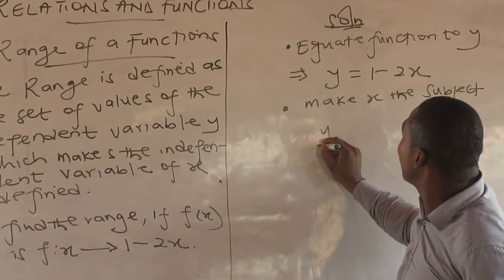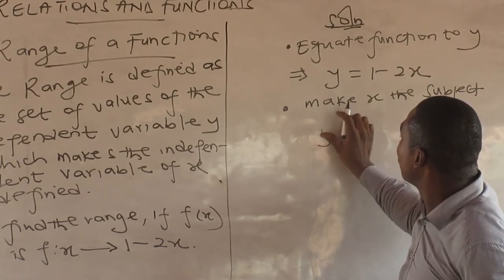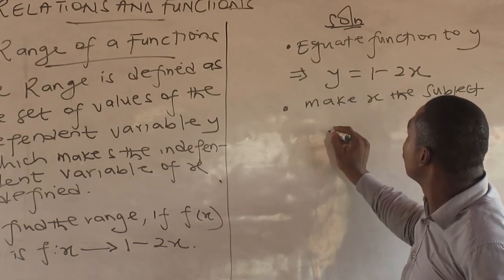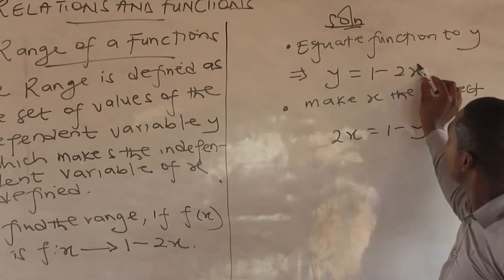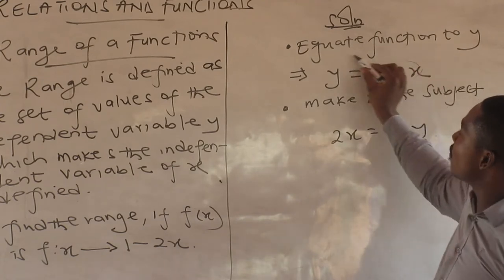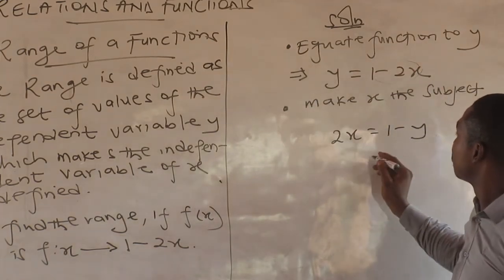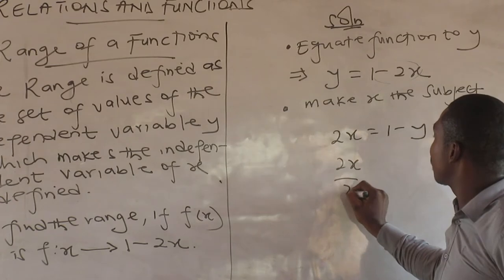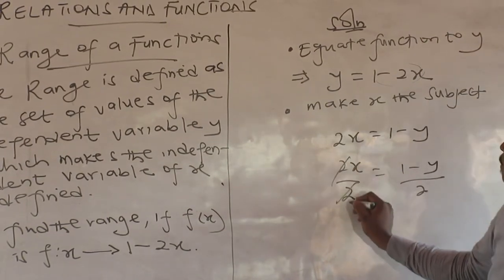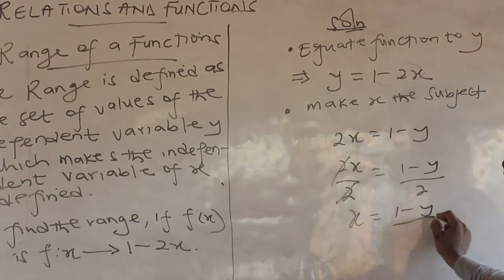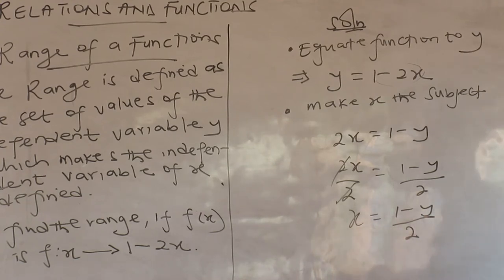I have two x equals one minus y. Dividing both sides by two, x equals one minus y all over two. Good.